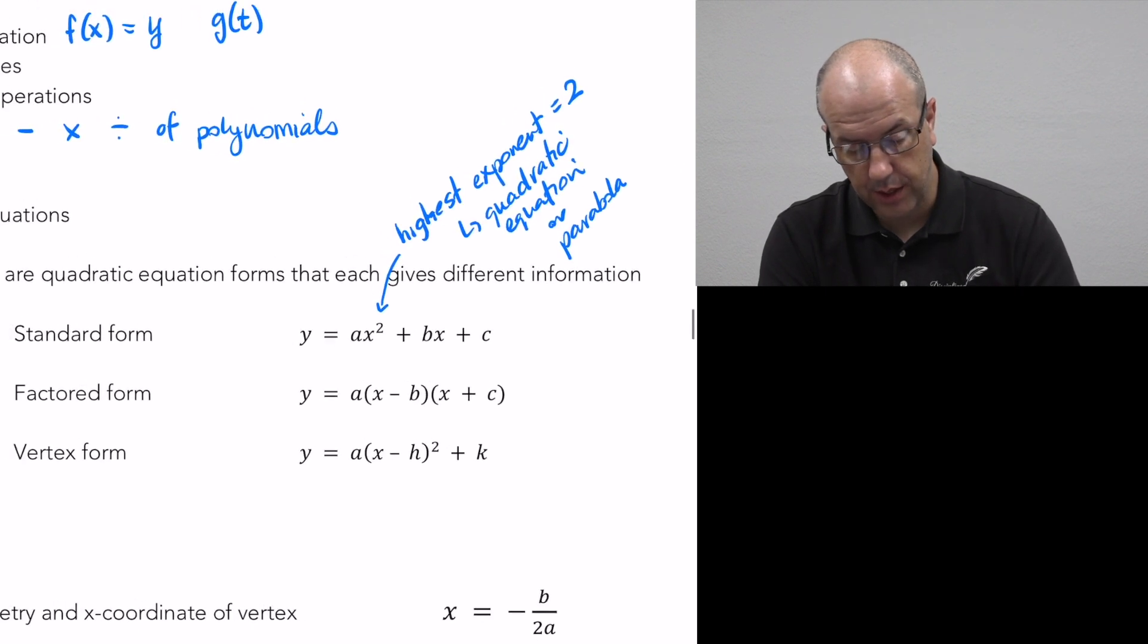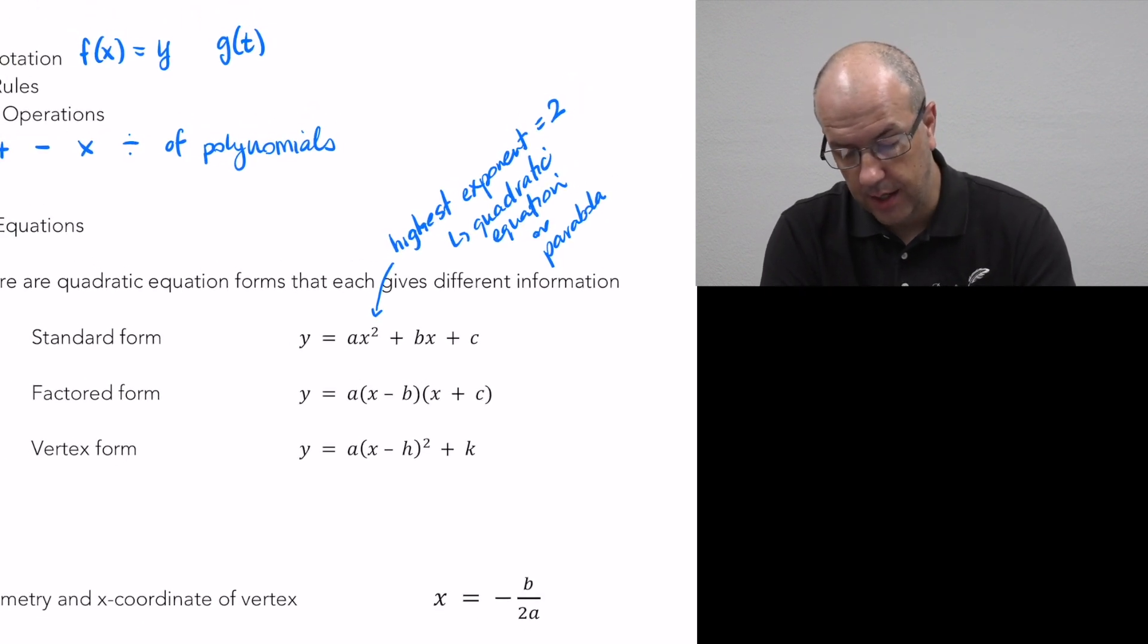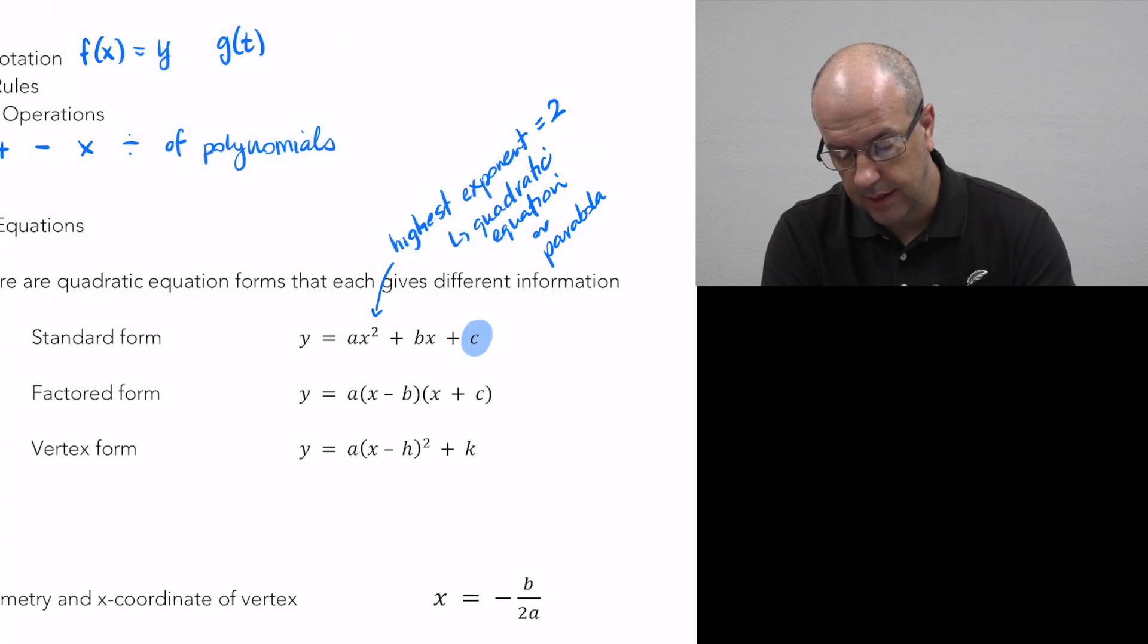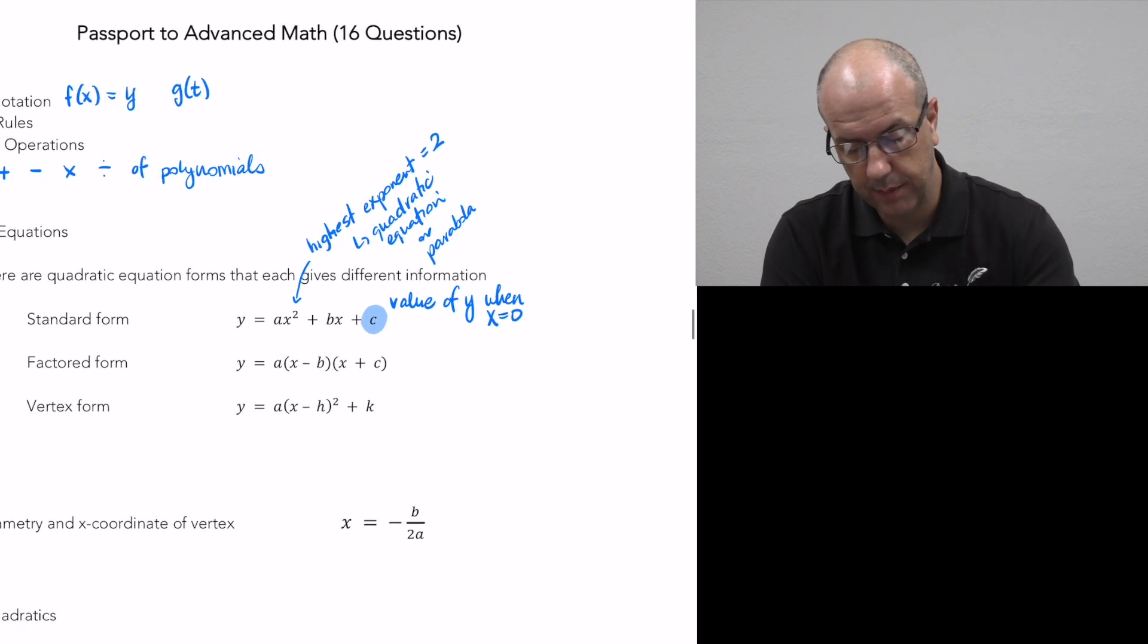So standard form, the information that we get from here is that the c value is the value of y when x is equal to 0. And so therefore we know that that means that this is the y-intercept of the function, and we can get that just by looking at the equation. We look at the c value and say it's 4, okay, the y-intercept is 4.